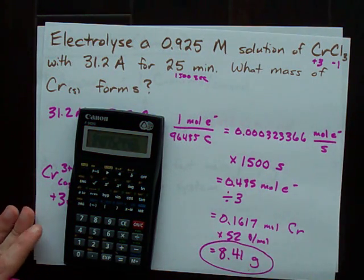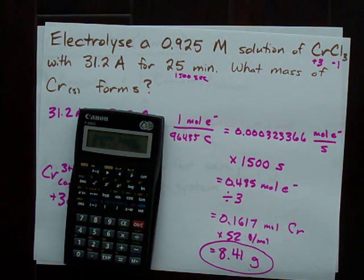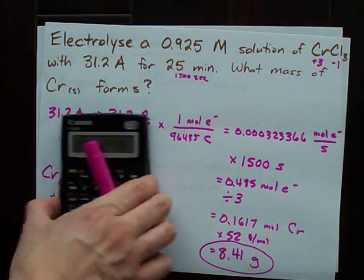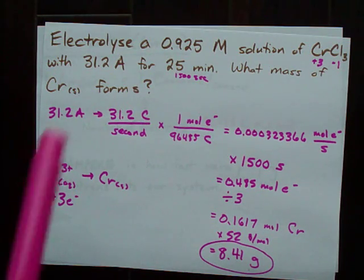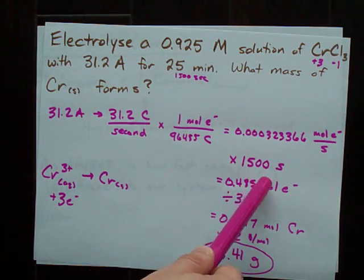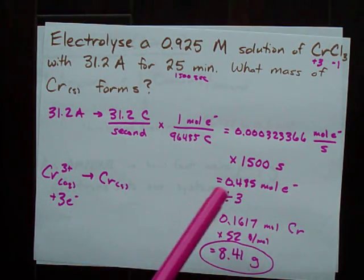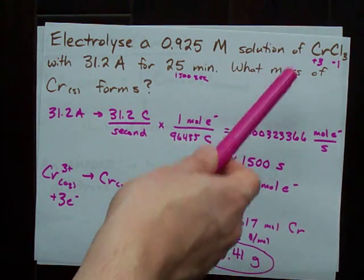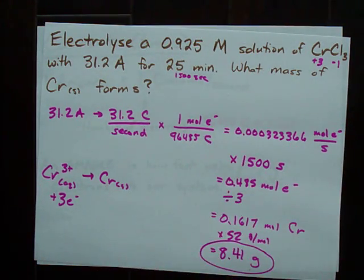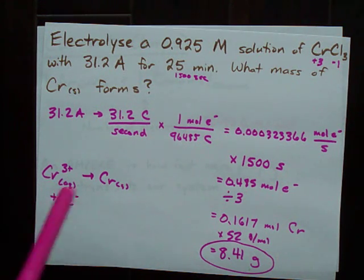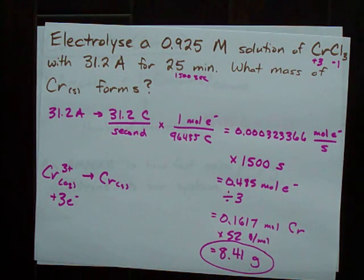Now, I remember stealing this question off of a Yahoo Answer website, and that was the answer that they gave, too. The point here was we had a certain number of amps going in. That allowed us to count the number of electrons. Knowing how many electrons we had pumped in over the amount of time, we were able to adjust it for how many atoms of chromium were made into solid chromium or reduced. And then we used the molar mass to get the corresponding mass of chromium that was formed.